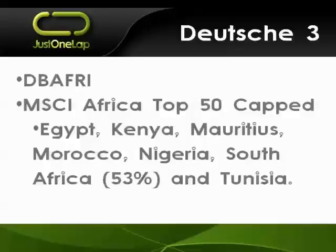The third one from Data Bank is DBAFRI, which is obviously the Africa one. It's tracking the MSCI Africa Top 50 — a capped index using market cap, capped at 50 stocks broadly across Africa. South Africa has a 53% weighting, which means a little over half of this is actually giving you exposure to South Africa. South Africa's a big part of Africa, make no mistake. You've got Egypt, Nigeria, Kenya, and Mauritius getting bigger because of their tax status. Tunisia and Morocco are often forgotten about. So it's much narrower than the Standard Bank one, but that South Africa component — to my mind, if I wanted Africa exposure, I've already got my South African exposure and I would want non-South African exposure rather than getting more South African exposure by buying the Data Bank one.